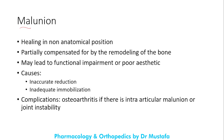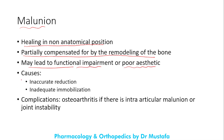Malunion is healing of the fracture in a non-anatomical position. It is partially compensated for by remodeling of the bone and may lead to functional impairment or poor aesthetics. Causes include inaccurate reduction and inadequate immobilization. Complications include osteoarthritis if there is intra-articular malunion, or if the joint is unstable because of the malunited fracture.